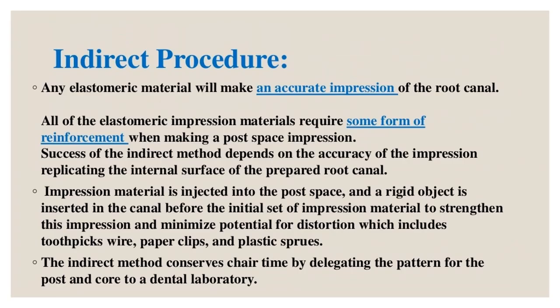Indirect procedure: any elastomeric material will make an accurate impression of the root canal, though all elastomeric impression materials require some form of reinforcement when making a post space impression. Success depends on the accuracy of the impression replicating the internal surface of the prepared root canal. Impression material is injected into the post space and a rigid object — toothpick, wire, paper clip, or plastic sprue — is inserted before the initial set to strengthen the impression and minimize distortion. The indirect method conserves chair time by delegating pattern fabrication to a dental laboratory.